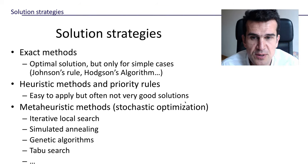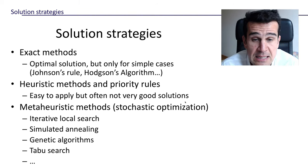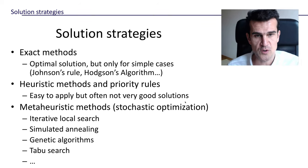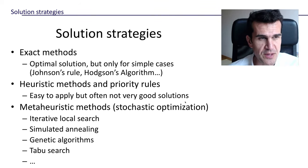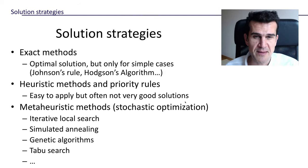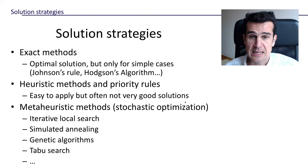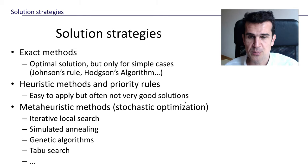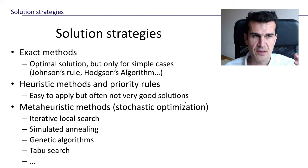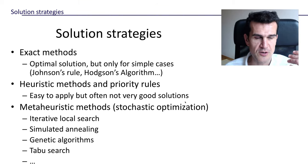The second approach is to use heuristic methods or priority rules. These are rules that are very simple to apply, but they don't usually give us very good solutions. We explore them because they are used in many firms, and it's important to be aware that these are not very good solutions. The last approach, which is the main focus of this course, is metaheuristic methods — also called stochastic optimization — such as iterative local search, simulated annealing, genetic algorithms, and tabu search.